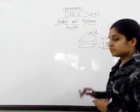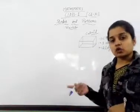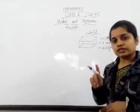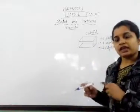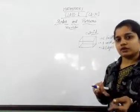In the cuboid, there are six faces. In the cone, there are two faces — one plain and one curved.